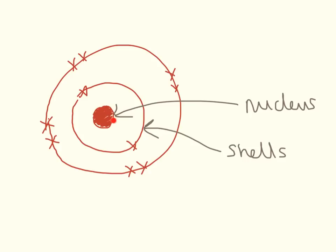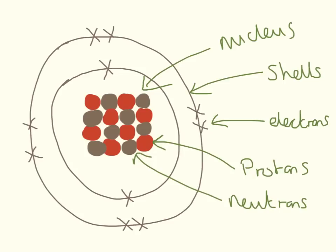What you need to know is the bit in the middle is called the nucleus. Not to be confused with the biology nucleus — this is the chemistry nucleus and all it means is the bit in the middle. Outside we have shells. There are two things in the nucleus in the middle: we have protons and we have neutrons. On the shells around the outside we have electrons.